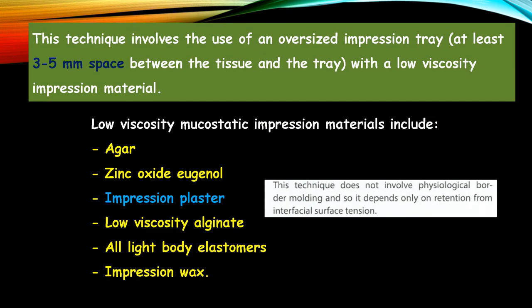This technique involves the use of an oversized impression tray, because at least three to five mm of space between the tissue and tray is needed, along with a low viscosity impression material. The various low viscosity mucostatic impression materials include agar, zinc oxide eugenol, impression plaster, low viscosity alginate, all light body elastomers, and impression wax. The impression material of choice for the mucostatic technique is impression plaster. This technique does not involve physiological border molding, and depends only on the retention from endofacial surface tension.